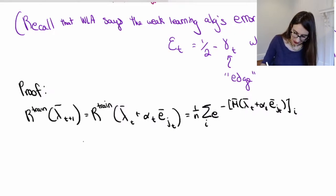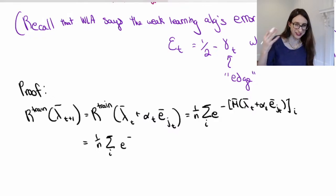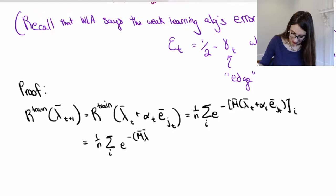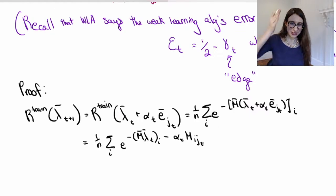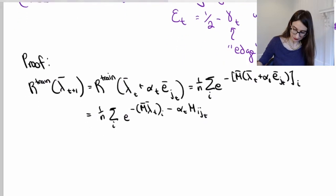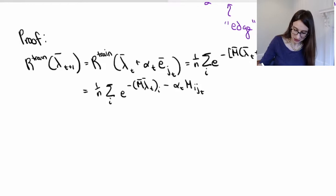So then I can rewrite this as (1/n) Σ_i e^{-( m_{λ_t,i} - α_t · m_{i,j_t} )}, because e_{j_t} means look at that j_t column of m, and i means take the i-th component, so you just end up with m_{i,j_t}. Now I'm going to separate this into two sums: one for points where m_{i,j_t} = 1, and the other for where m_{i,j_t} = -1 — separating the points that AdaBoost got right versus wrong at that iteration.